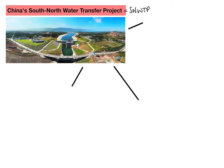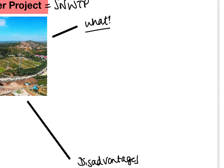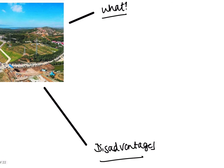If we think about what the exam board wants you to know, they want you to know three key components. They want to know what the scheme is, they want to know about the advantages, and they also want you to know about the disadvantages. You can't possibly explain the advantages and disadvantages without knowing what the project involves first.